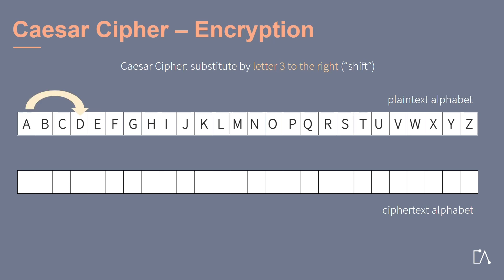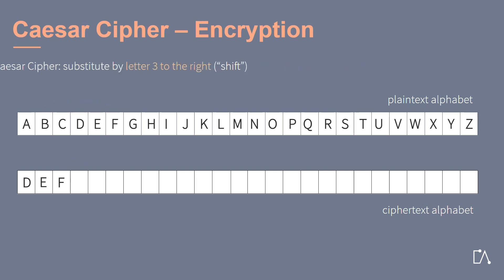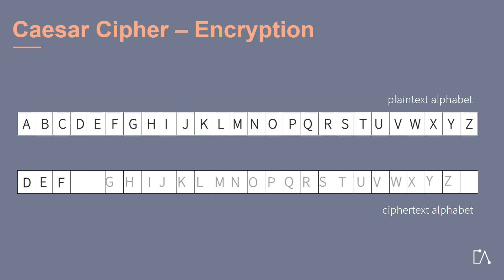For the letter A, this means that we look three spaces to the right to the letter D, and then write this letter down under A. Similarly, for B we get E, and by the same principle, for C we get F. In the same way, we can write down the remaining letters. When we reach the Z of the second alphabet, we simply start from the beginning with A, B, C.